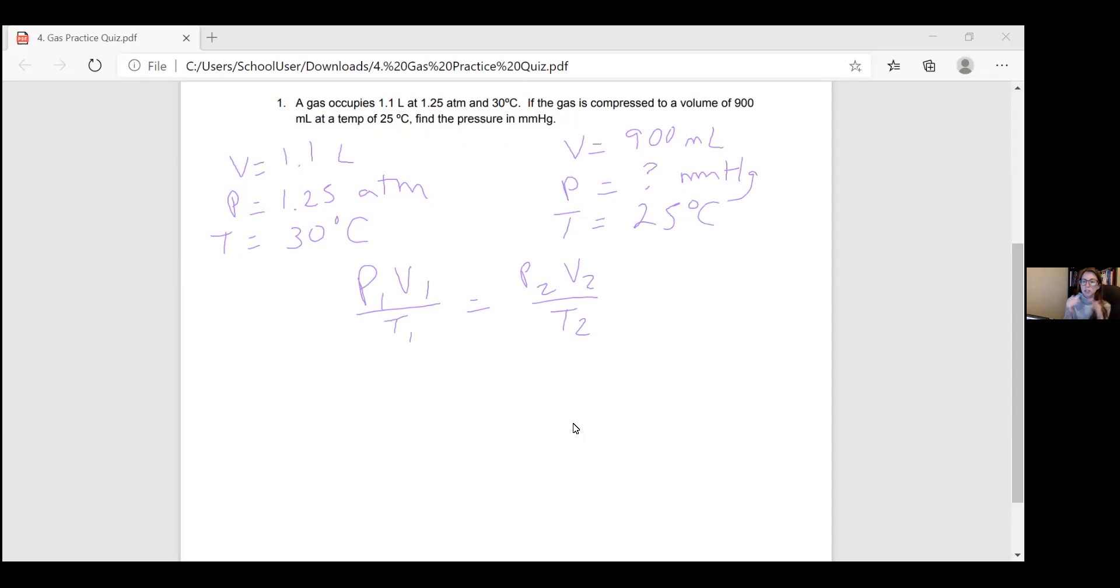In order to use this formula, as long as the units match on each side, we can use any units we want for pressure and volume. Temperature has to be in Kelvin. So I'm going to leave all of these units exactly as they are, and I'll convert the other side to match.